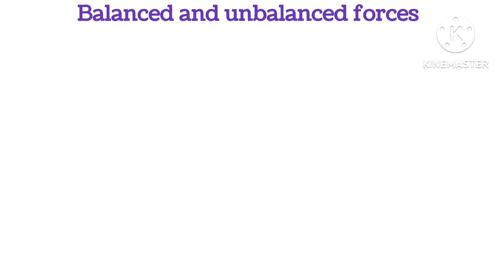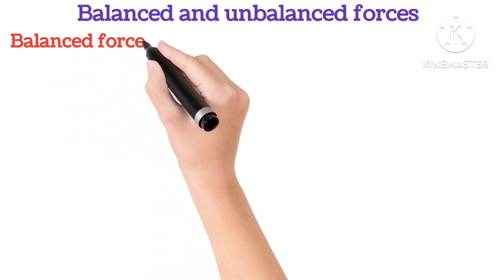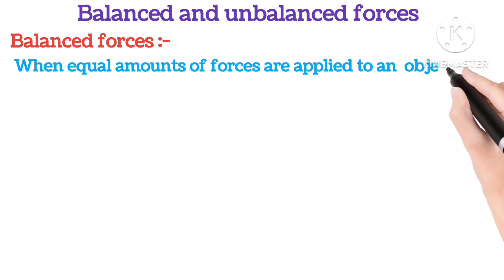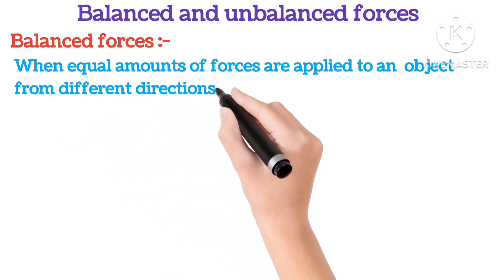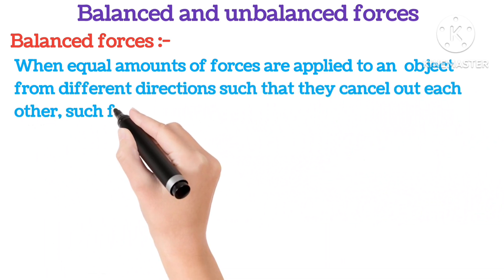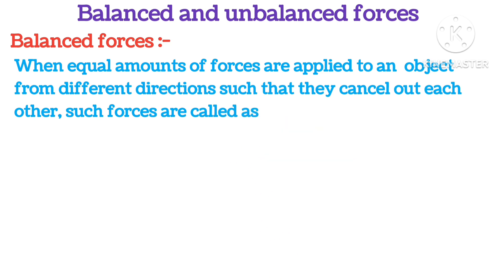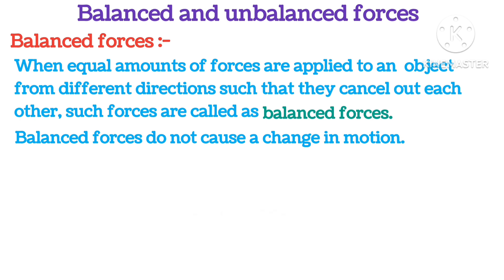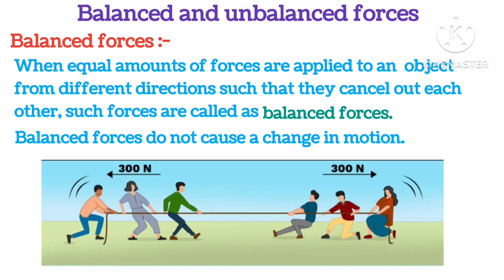Balanced and unbalanced forces. When equal amounts of force are applied to an object from different directions such that they cancel out each other, such forces are called balanced forces. Balanced forces do not cause change in motion. As you can see in the picture, equal amount of force, i.e. 300 N, is acting on both sides of the rope. Hence, net force is 0, so no change is taking place — it is a balanced force.